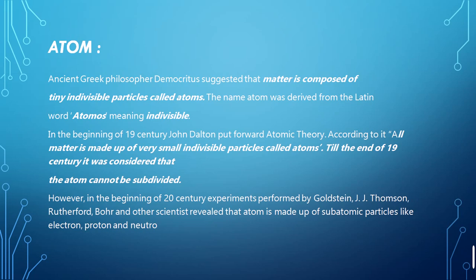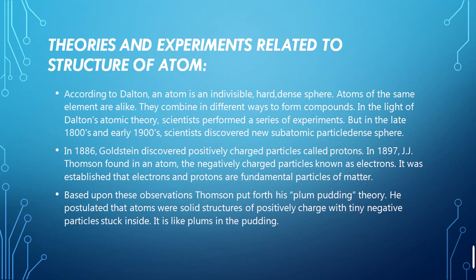These experiments revealed that the atom can be divided into sub-particles called the electron, proton, and neutron. Moving towards the first theory put forward for the structure of the atom: it showed that the structure of the atom is not indivisible but is a visibly hard dense sphere. Atoms of the same element are alike, and unlike elements combine to form compounds, either homogeneous or heterogeneous. Later, 18th to 19th century experiments discovered subatomic particles.